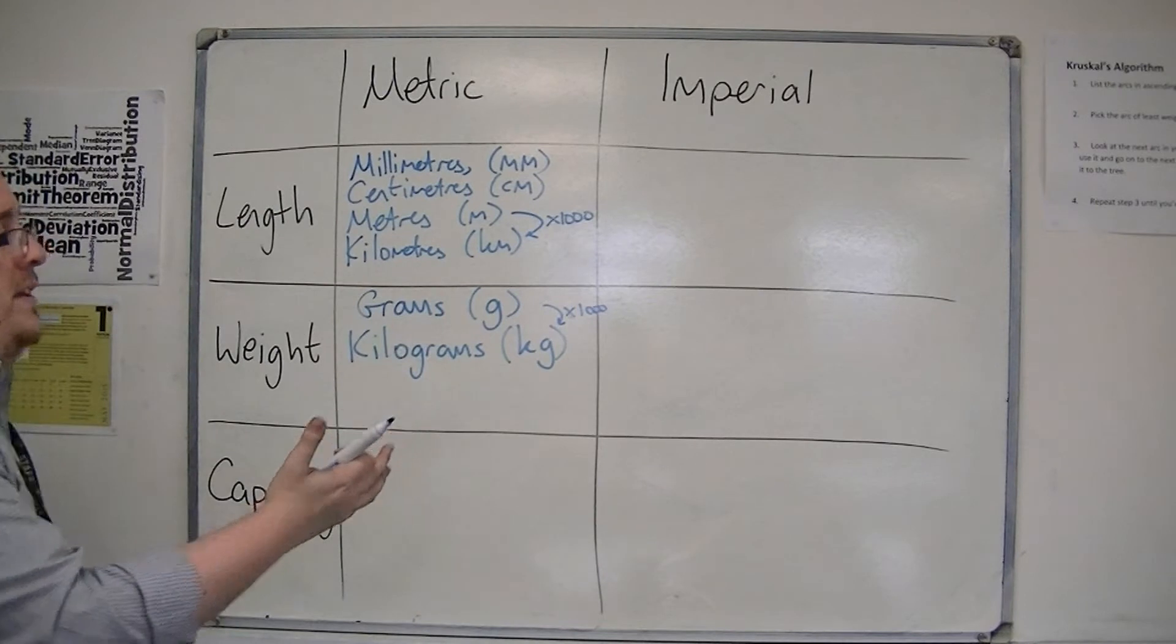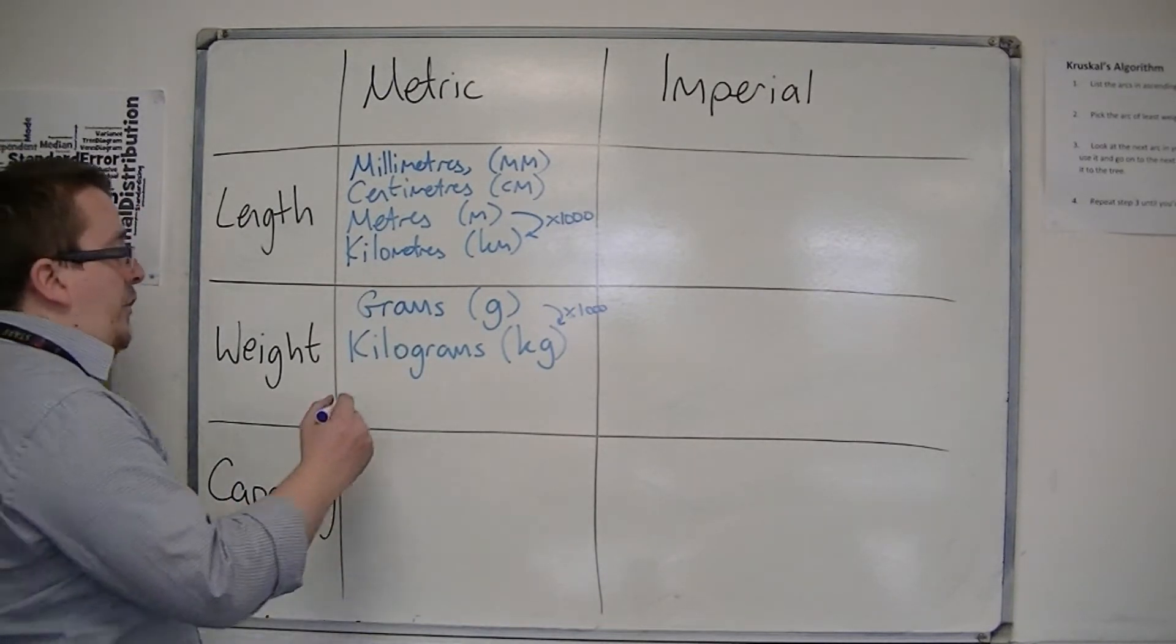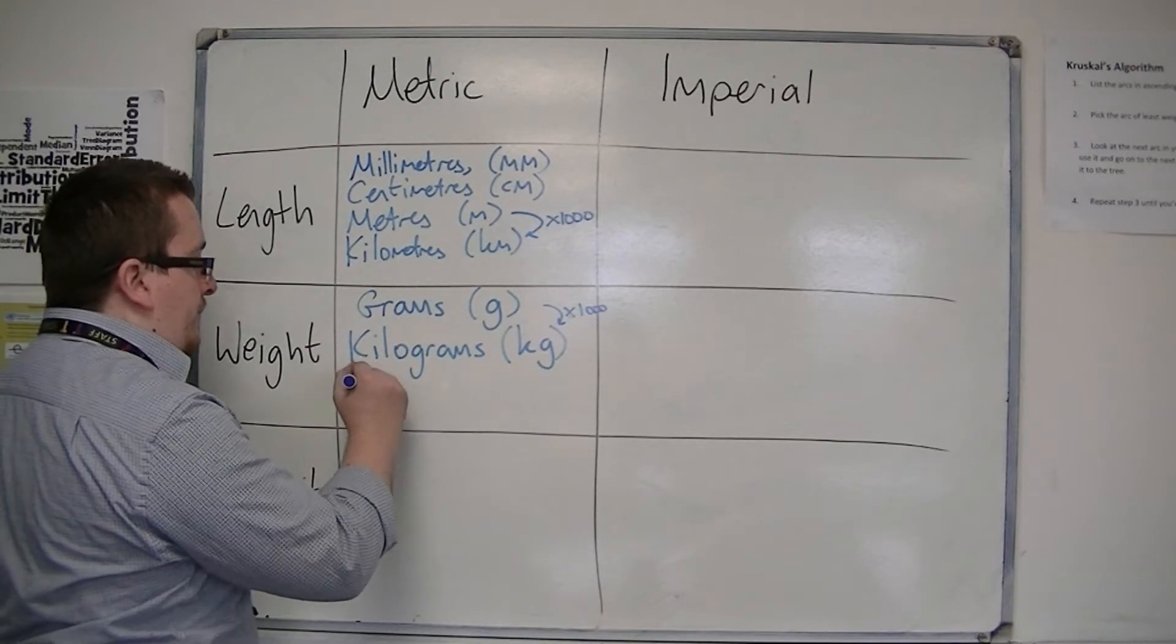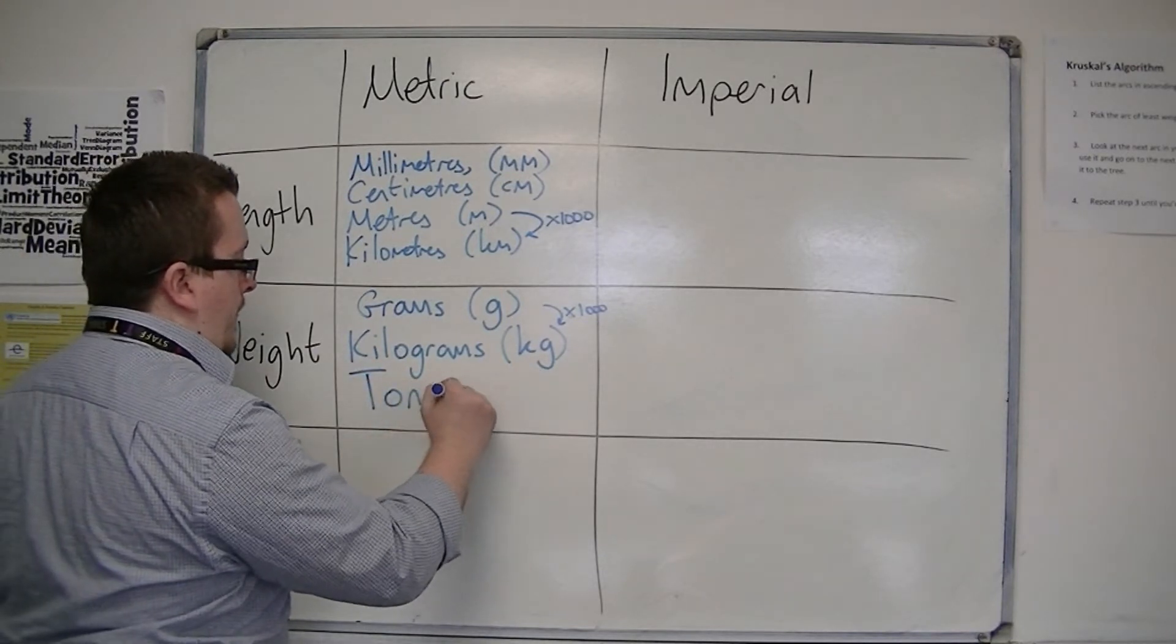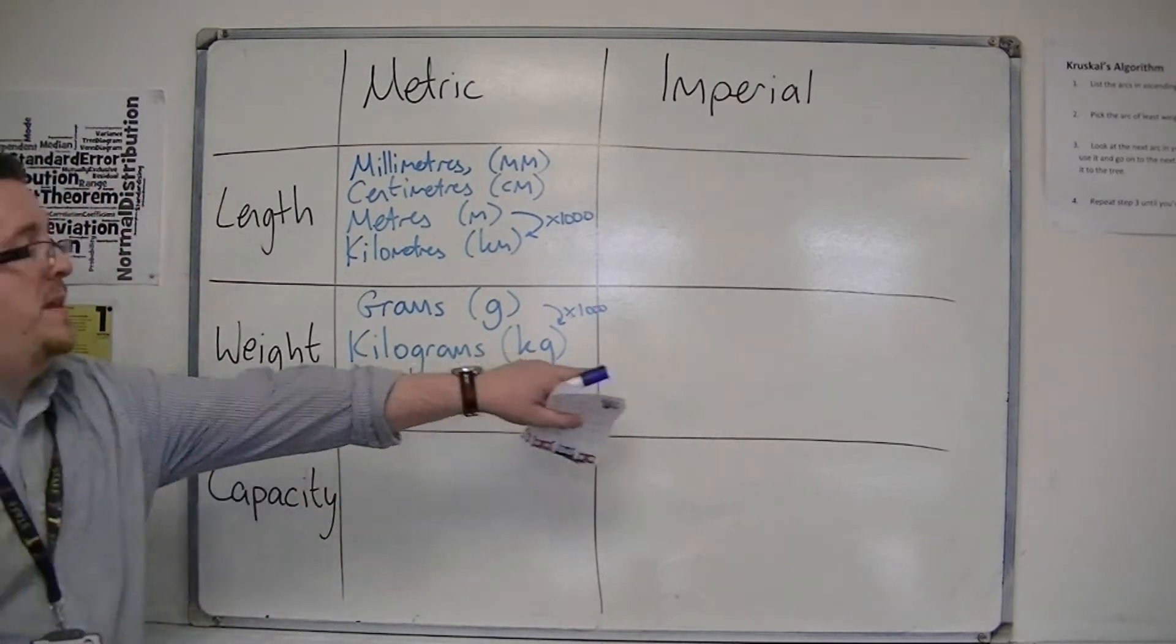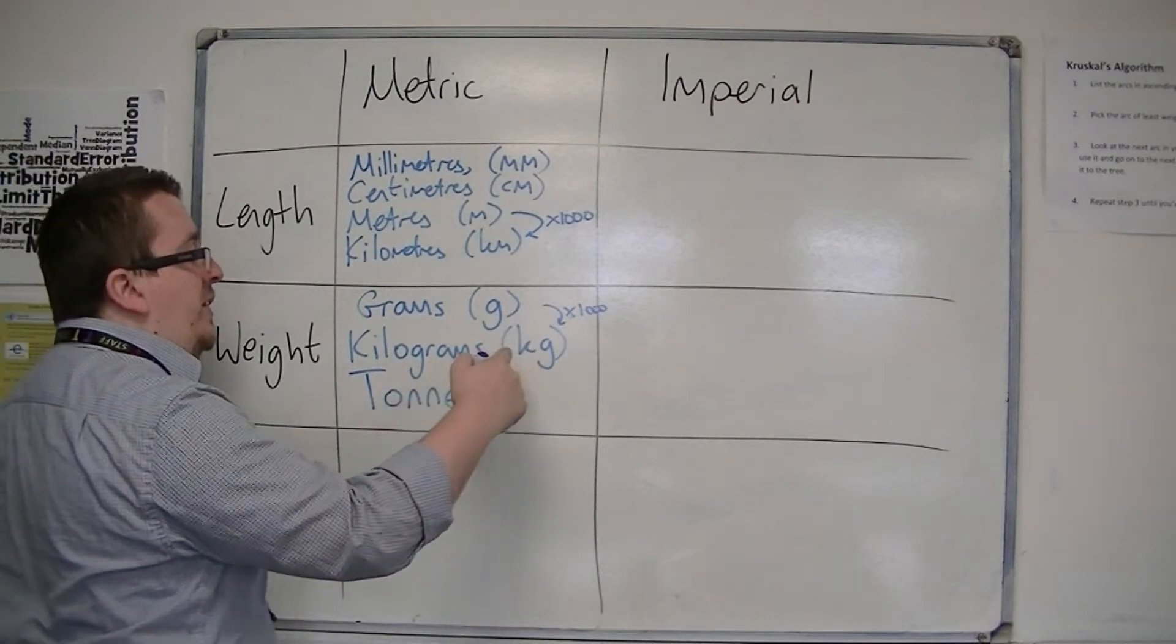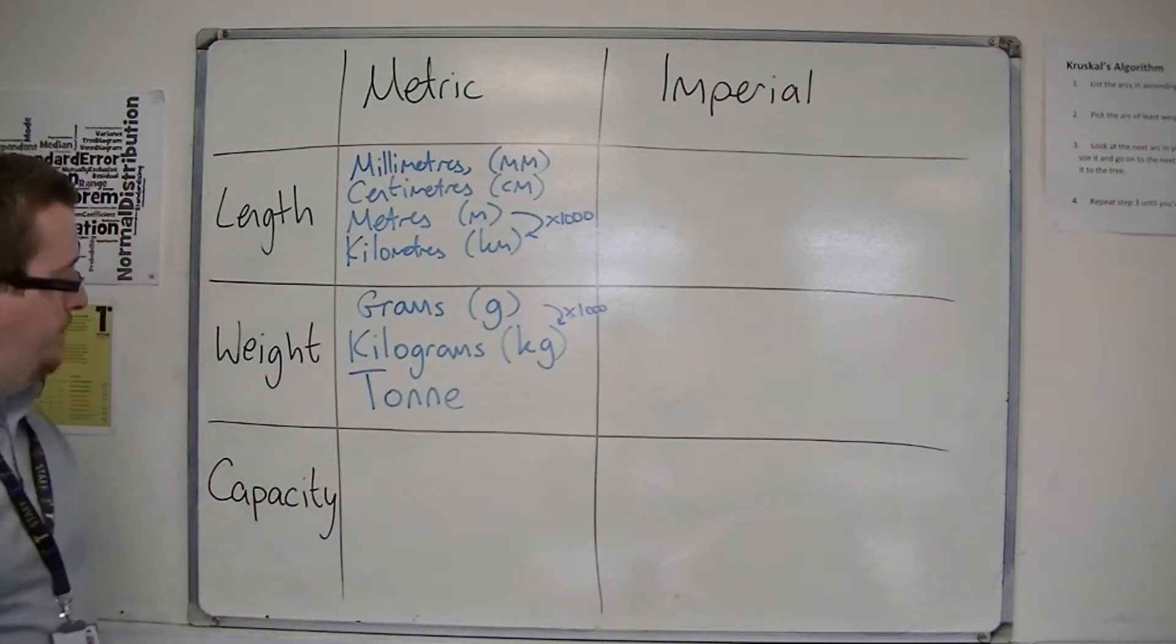So there are 1,000 grams in a kilogram. There are 1,000 metres in a kilometre. And then you also have tonnes. There is also an imperial ton that's written T-O-N. And there are 1,000 kilograms in a tonne.